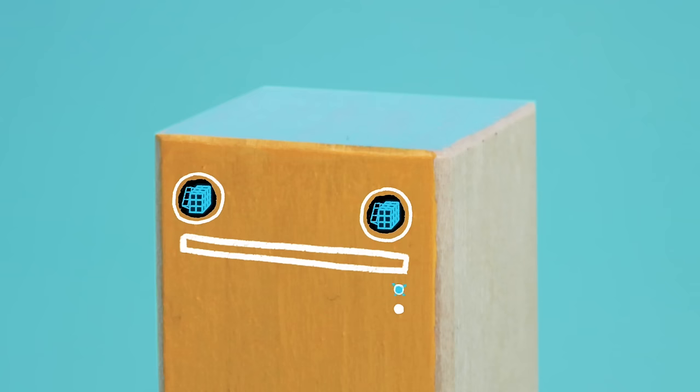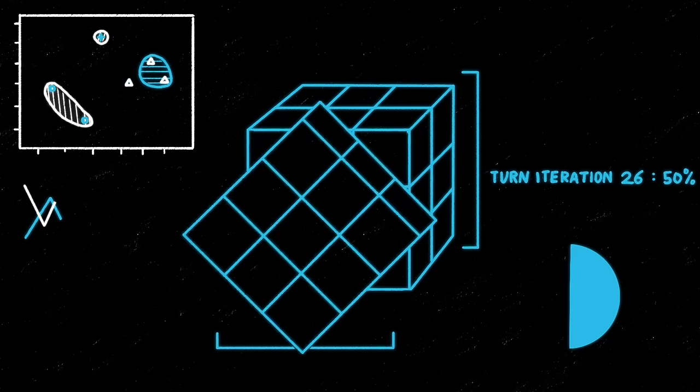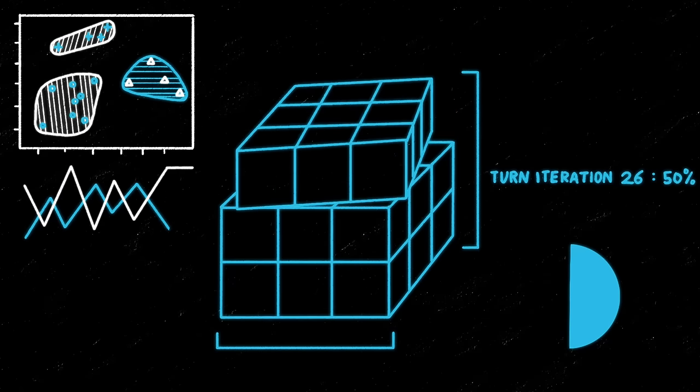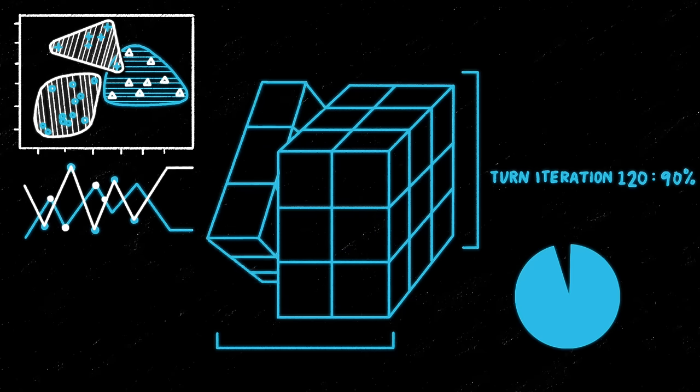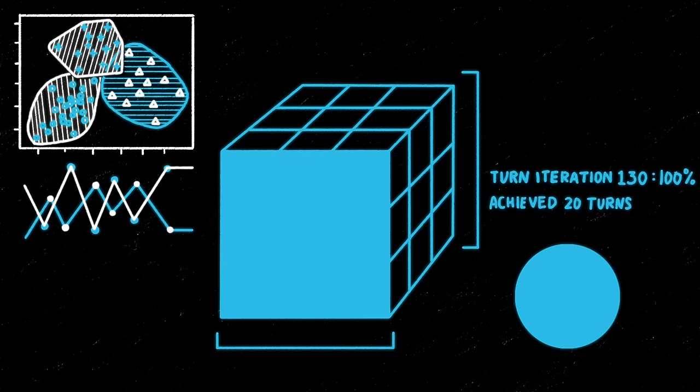But did you know that computers can do the same? Machine learning brings together statistics and computer science to enable computers to learn how to do a given task without being programmed to do so.